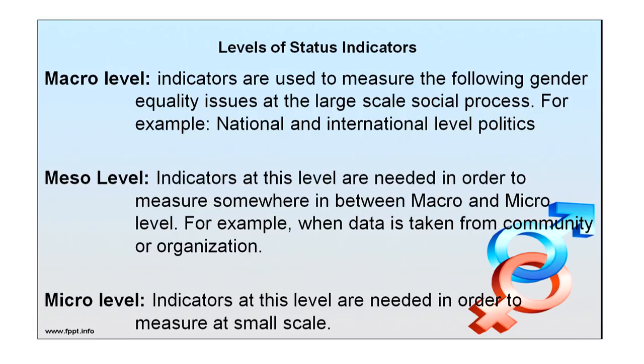Gender status indicators have three important levels. Indicators can be measured at macro level, meso level and micro level. At macro level, indicators measure gender equality issues at a larger scale social process — for example, national and international level politics. Meso level is between macro and micro — indicators at this level measure data from community or organizational contexts. Micro level indicators are needed to measure at a small scale.